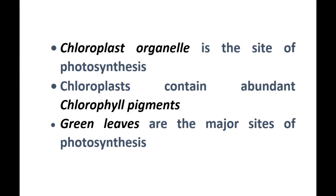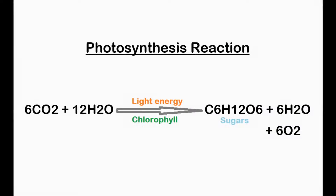Photosynthesis takes place inside cellular organelles called chloroplasts, which contain abundant photosynthetic pigments called chlorophyll. Chloroplasts are found in abundance in green leaves and are therefore the major site of photosynthesis in plants. Gaseous oxygen is a major byproduct of the process of photosynthesis.